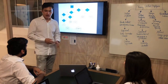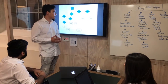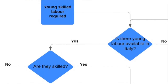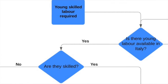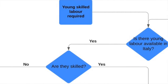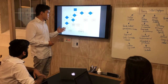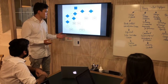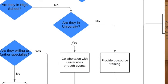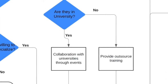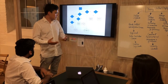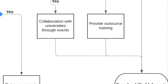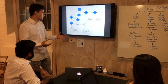Going back to the first question, if we do have young labor in Italy, we must ask: is that young labor skilled or unskilled? If it's skilled, we can directly supply it to our clients. If it's not skilled, we check whether they're attending high school or university. If they're attending neither, we can provide them with outsourced training to help them gain more skills, which ultimately leads to us supplying them to our clients who need workers.